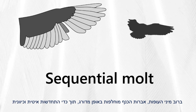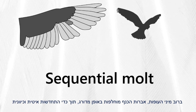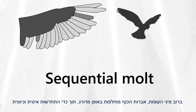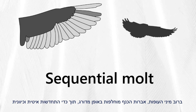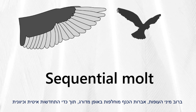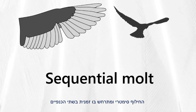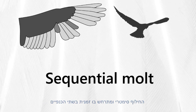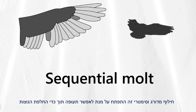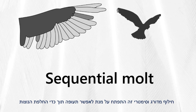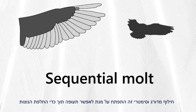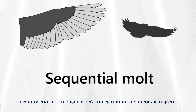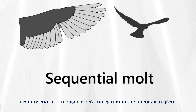In most bird species, wing feathers molt in a sequential and slow, gradual, and directional renewal of the wing feathers. It is also symmetrical between the two wings. The sequential and symmetrical process has developed to maintain the bird's flight ability during this process.